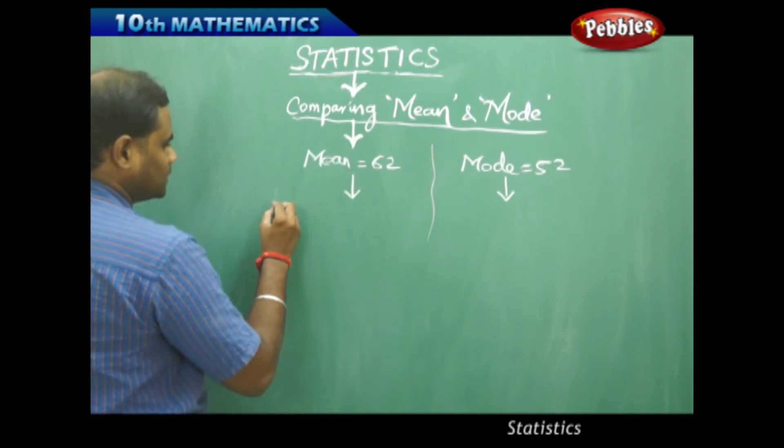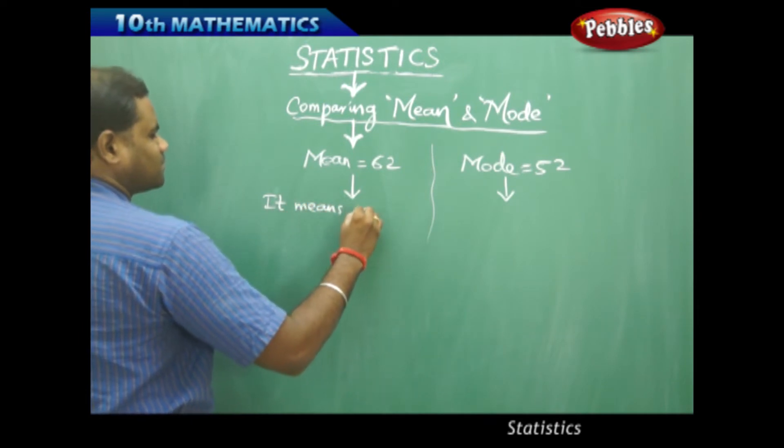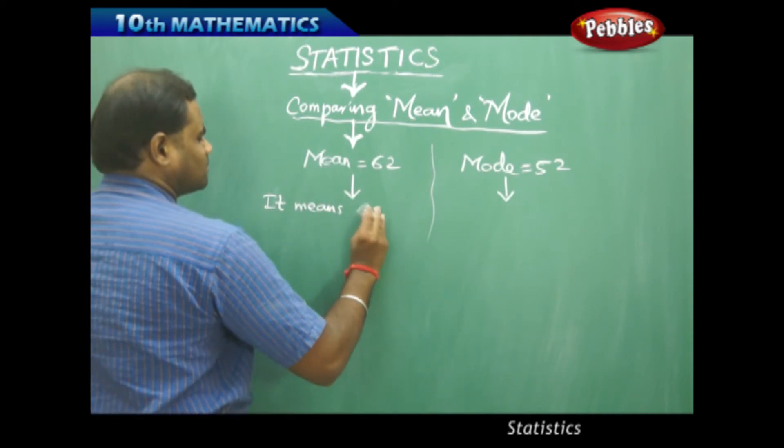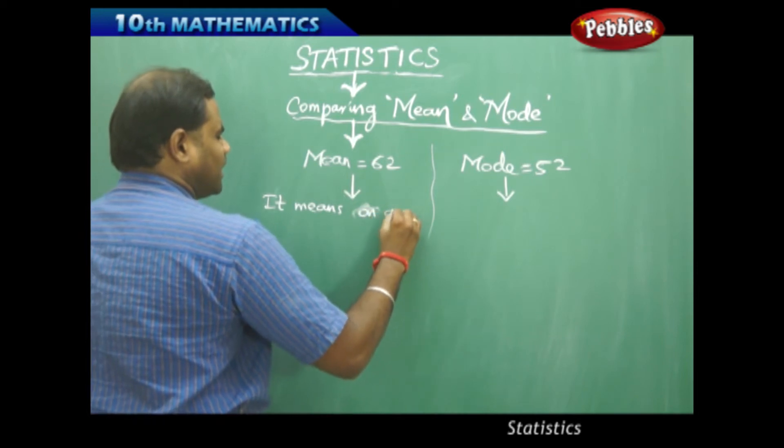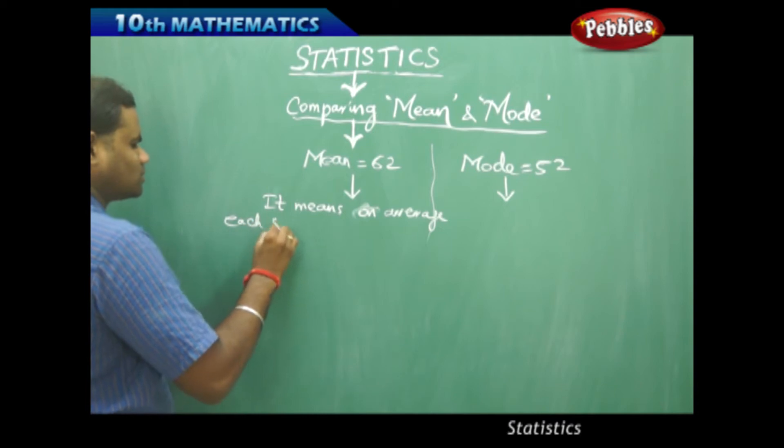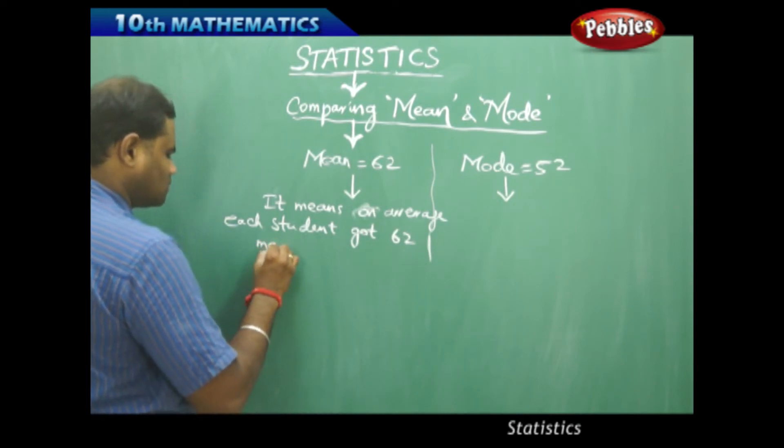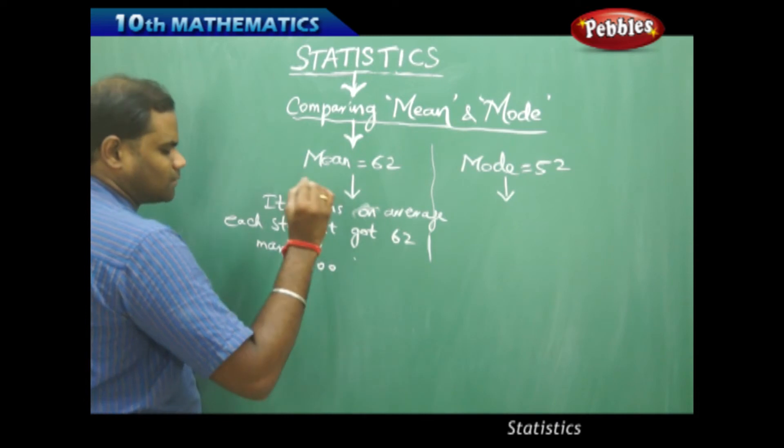This value gives me that mean equal to 62 means, on average, each student got 62 marks out of 100 in mathematics.